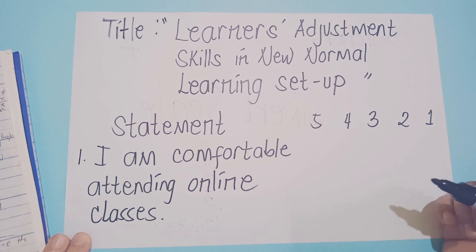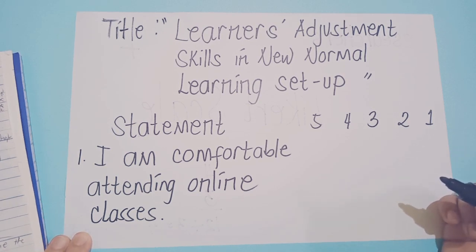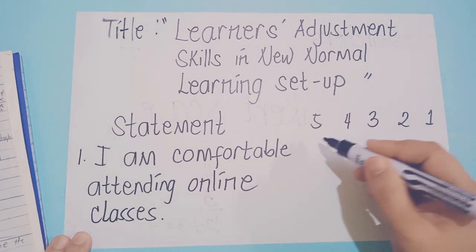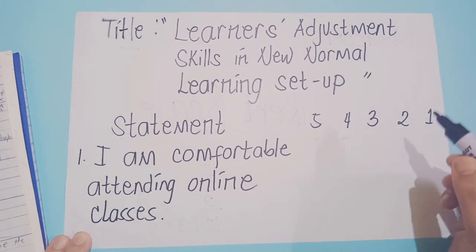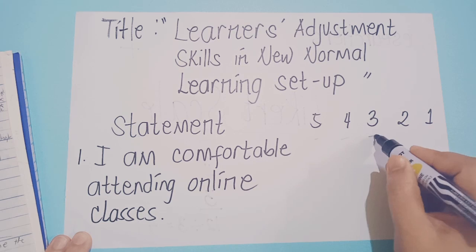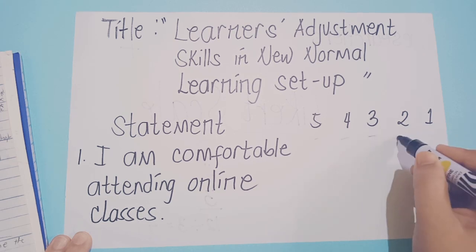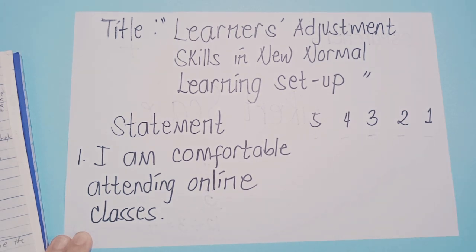So, let us assume that your first statement is: 'I am comfortable attending online classes.' All statements in the survey questionnaire will be evaluated from 5 to 1 based on the feelings, thoughts, and experiences of the respondents. The results will be computed to determine the mean of each category, which may fall within the given range of 5, 4, 3, 2, and 1, and will be interpreted based on the range and response given. So let us do it in detail.